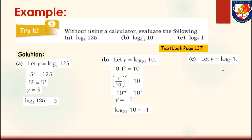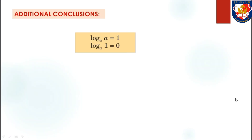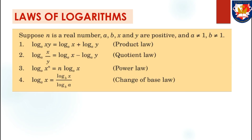For Part C: let y equal the logarithm of 1 to the base of 7. Based on the definition, 7 to the power of y equals 1. Since 1 equals 7 to the power of 0, y equals 0, so the logarithm of 1 to the base of 7 equals 0. Additional conclusions: the logarithm of a to the base of a equals 1, and the logarithm of 1 to the base of a equals 0.